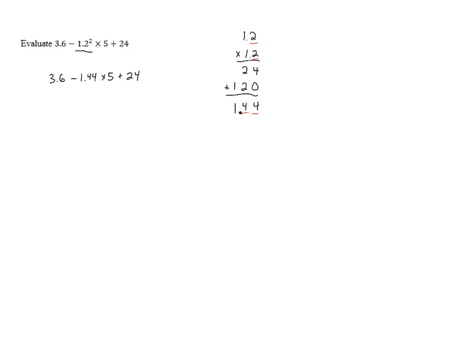So now we've done the exponents, we can move on to multiplications and divisions. There's only one multiplication here, so that's going to be our next step. We need to take 1.44 and multiply it by 5. 5 times 4 is 20, carrying the 2. 5 times 4 again is 20, plus 2 is 22. We carry the 2 again. 5 times 1 is 5, plus 2 is 7. So we get 7, 2, 0. There are two digits to the right of the decimal point in the problem, so we need to put the decimal point in the answer so there are two digits to the right of it. That gives us 7.20, or just 7.2.